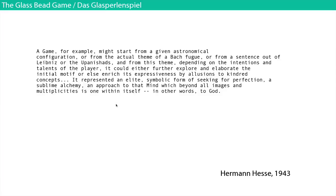Here is the passage: 'A game, for example, might start from a given astronomical configuration, or from the actual theme of a Bach fugue, or from a sentence out of Leibniz or the Upanishads. And from this theme, depending on the intentions and talents of the player, it could either further explore and elaborate the initial motif, or else enrich its expressiveness by allusions to kindred concepts. It represented an elite symbolic form of seeking for perfection, a sublime alchemy, an approach to that mind which beyond all images and multiplicities is one within itself.' In other words, to God.